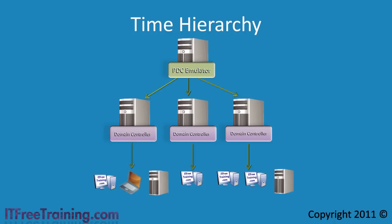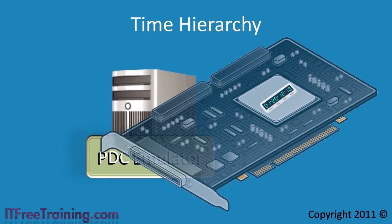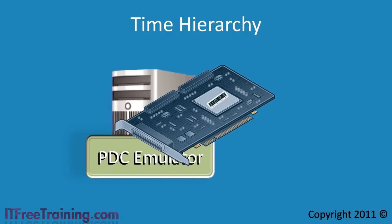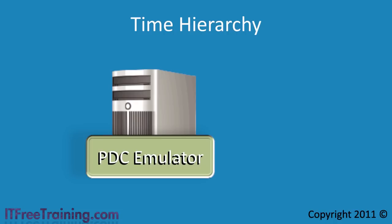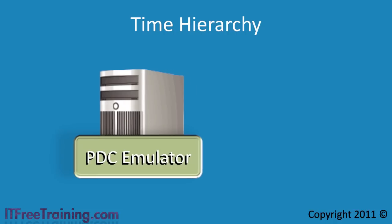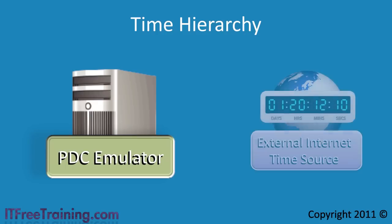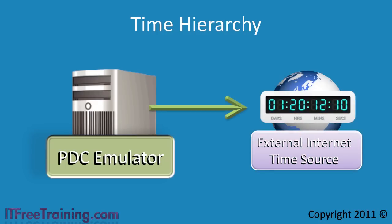If your company has the money, they may consider installing a hardware clock in the PDC emulator. These clocks are more accurate than the clock found in the computer. In most cases a company will choose to sync the PDC emulator's internal clock from an external time source. This is generally the preferred method because it will keep your clocks accurate and costs nothing in additional hardware. If your network does not have internet access, for example it is a secure network, you may have no choice but to install a hardware clock in your PDC emulator to ensure the time stays accurate.